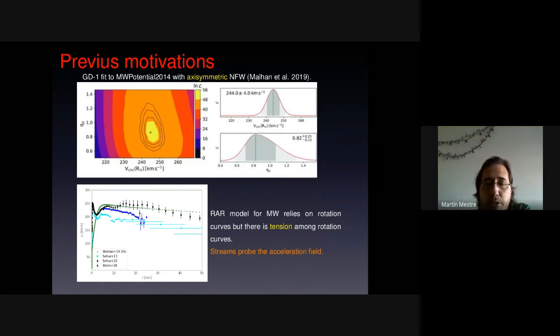And the other motivation is that the RAR model relies on rotation curves, but there is some tension among rotation curves. Here we can see three different rotation curves that they differ. It's true that the rotation curves depend on the velocity of the local standard of rest assumed, but even if we rescale them, they have differences. So the idea is to use the streams to probe the acceleration field.